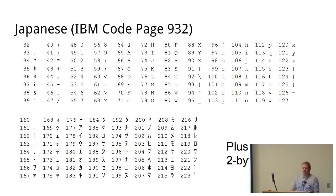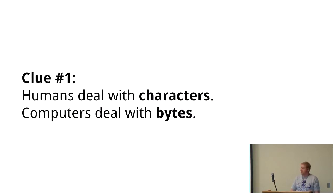Even some two-byte characters — there's not enough bytes to represent all the characters. So basically, an encoding is a way of mapping characters into numbers or bytes that a computer can understand. The first clue in our mystery: humans deal with characters, but computers deal with bytes. An encoding is how you map human characters into bytes that a computer can understand.